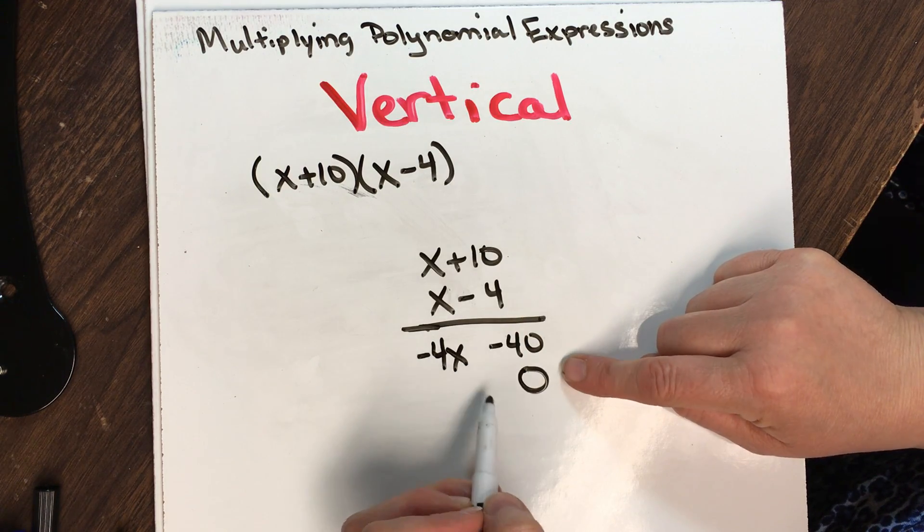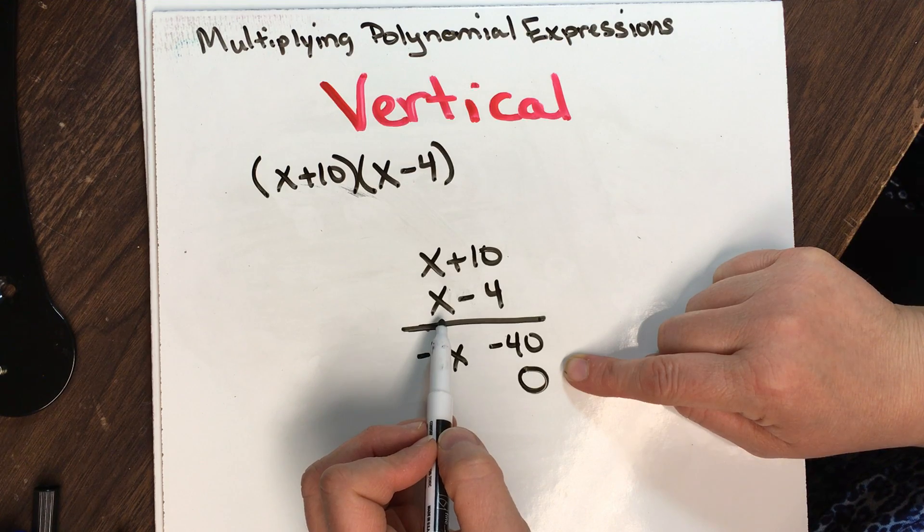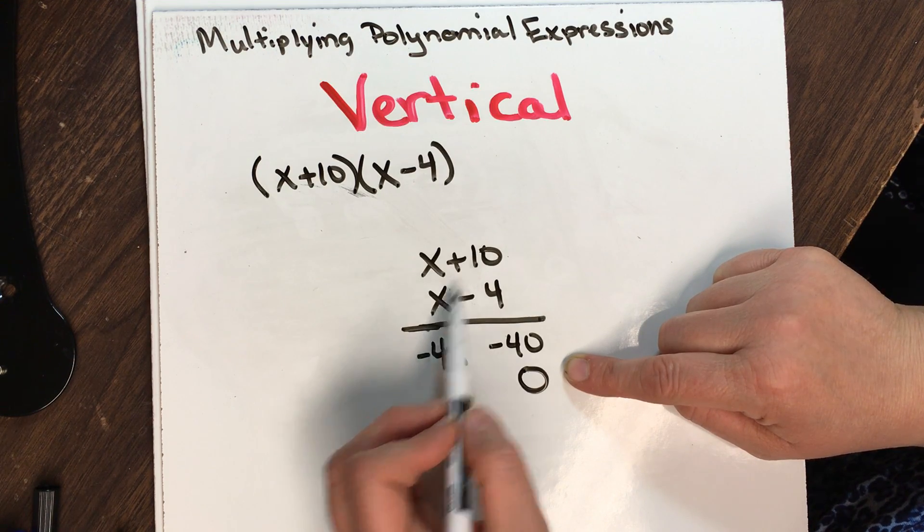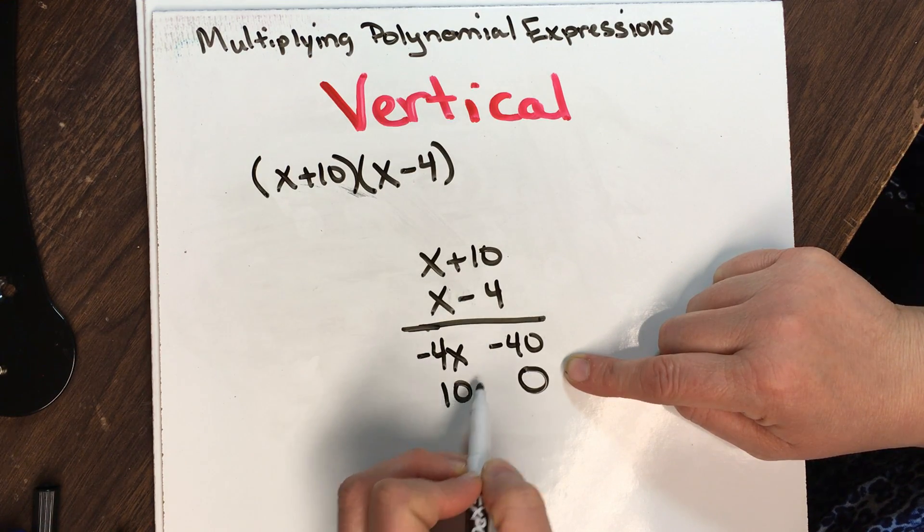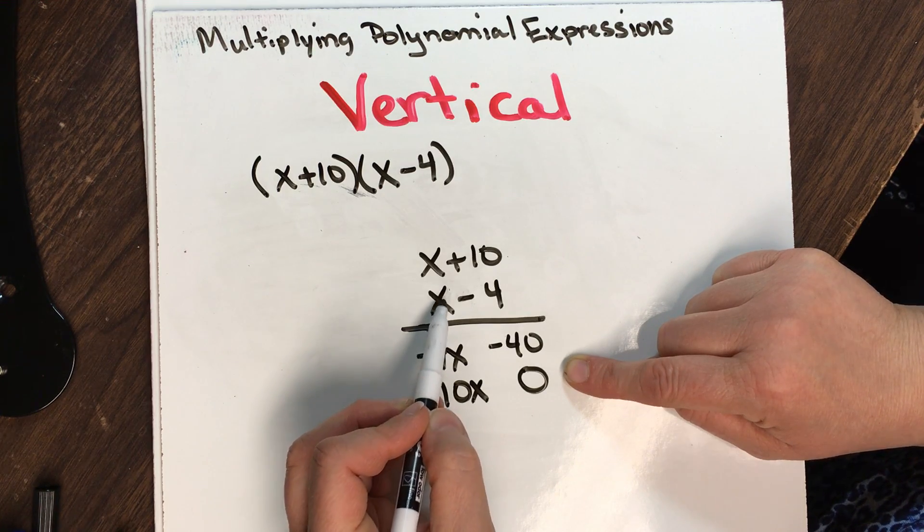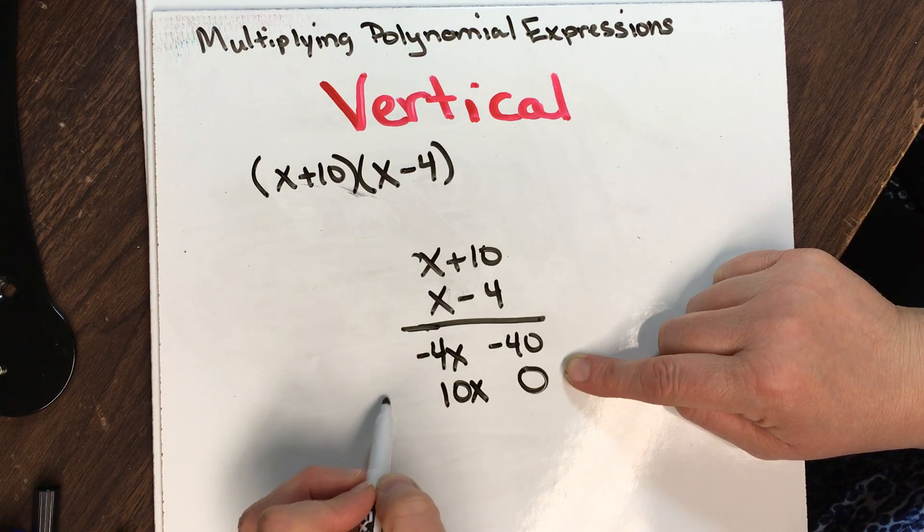I'm going to put that there to keep my space. Because I'm using my second term now, I have x times 10 is 10x. And now I'm here, x times x is x squared.